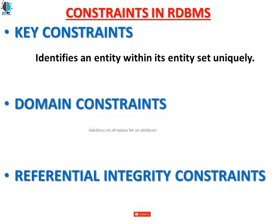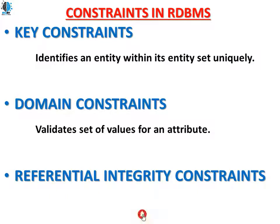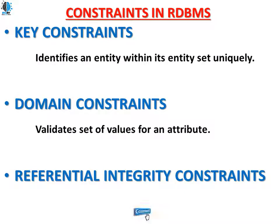Domain constraint: it validates the set of values for an attribute. An attribute is a field in a table. For example, if age is an attribute, the constraint would specify that age cannot be zero or negative. Domain constraints look after these types of validation rules for each attribute in a database.